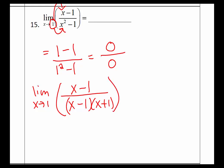We need to go back to the original and factor and see if anything will cancel, and we know that something will. x minus 1 divided by x minus 1.